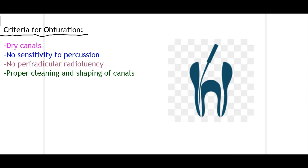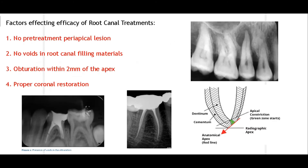There are certain criteria to achieve when performing obturation. Firstly, the canals should be dry — we use paper points to dry the canals after irrigation. Secondly, there should be no sensitivity to percussion, as sensitivity indicates remaining pulp tissue. Thirdly, there should be no periradicular radiolucency, as this indicates bacterial load that could cause secondary infections. Lastly, cleaning and shaping must be performed properly so obturation achieves its purpose.